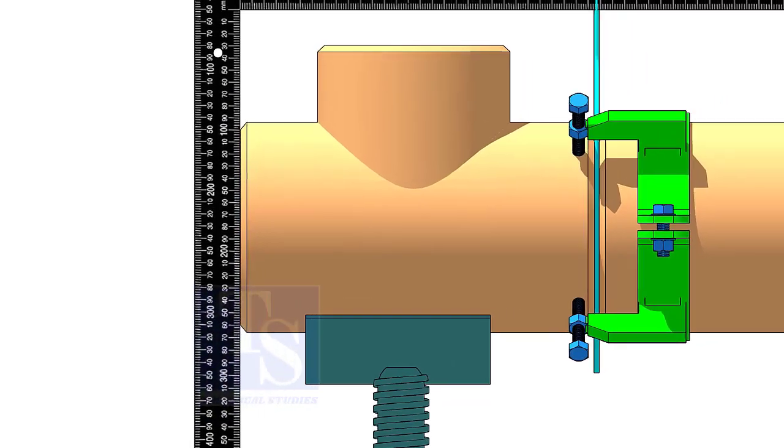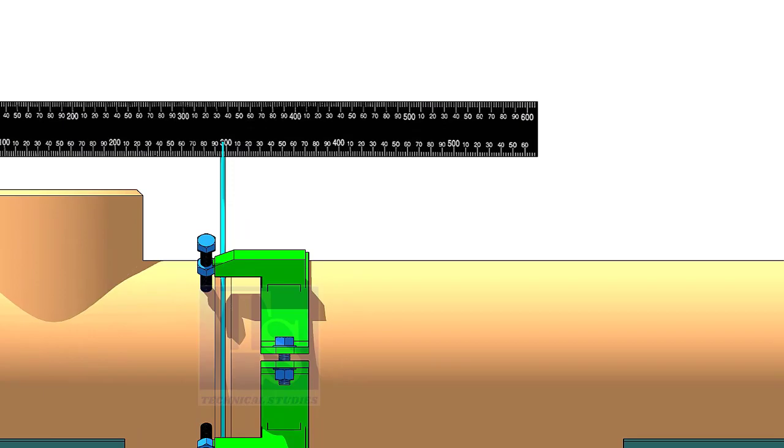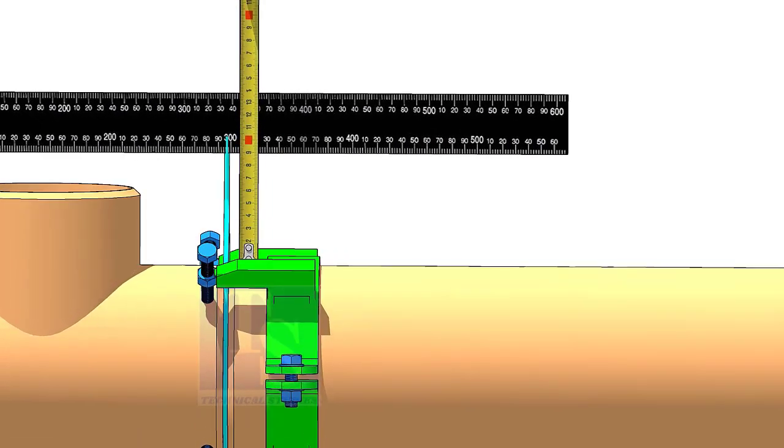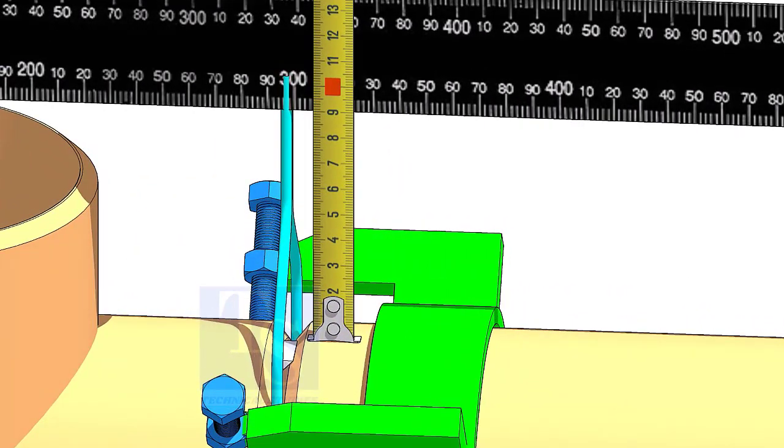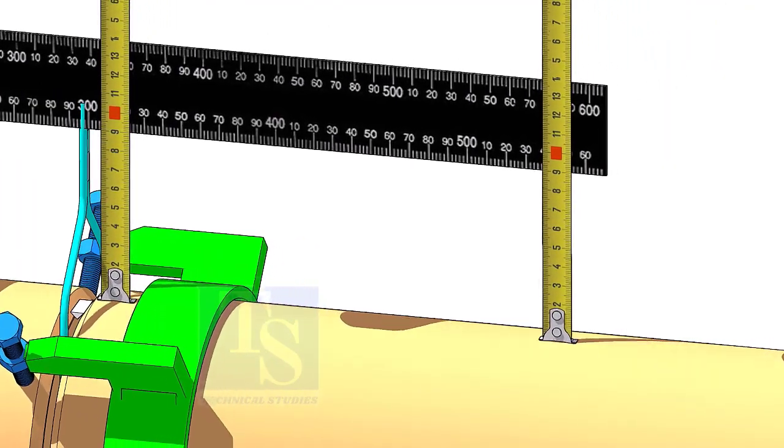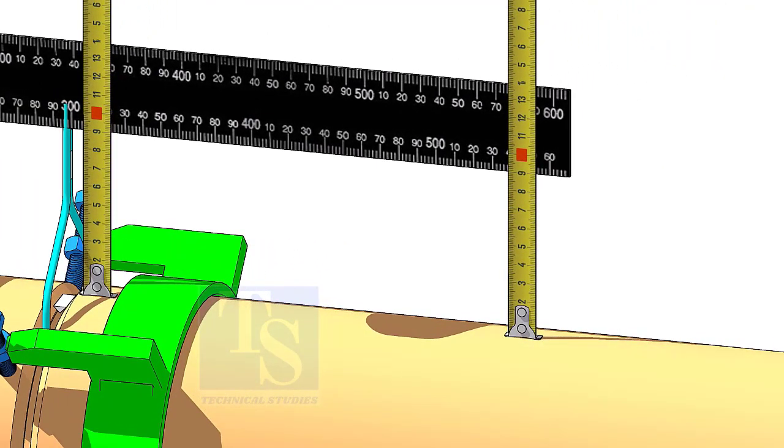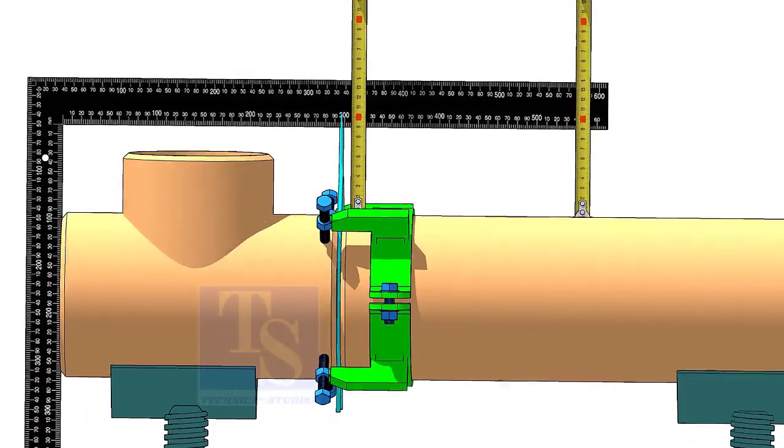Put a right angle on the face of the T as shown, check the distance. Adjust the T to correct the distance and tack weld at the bottom of the joint.